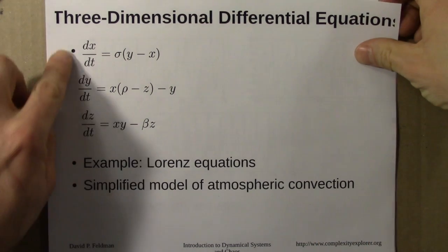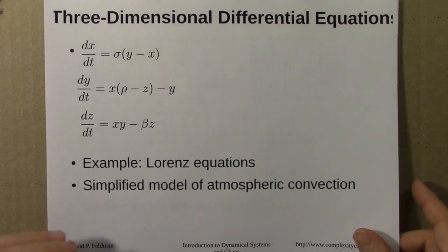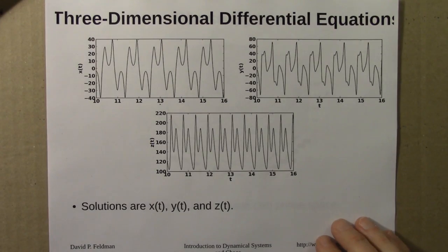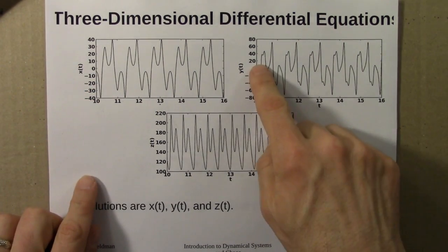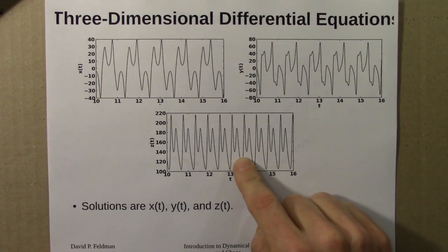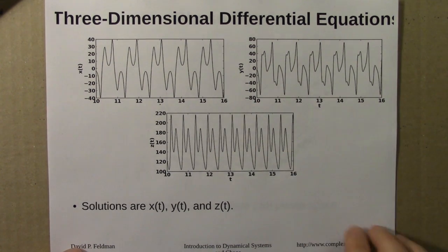If we use Euler's method or the like to get a solution for this, we'll get three solution curves: x versus time, y versus time, and z versus time. We can plot those in time, and in this case, we see periodic wiggling in all of these.